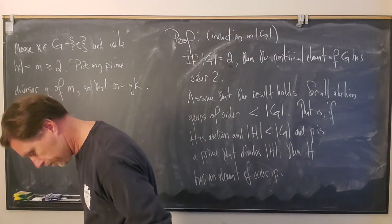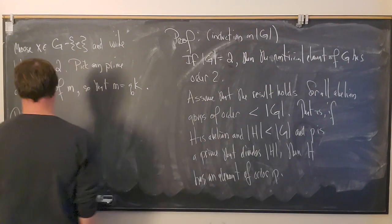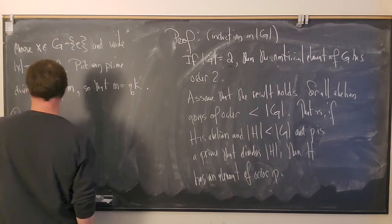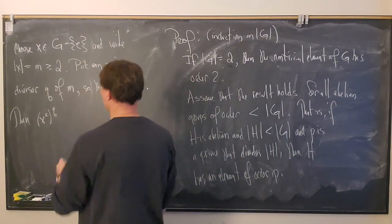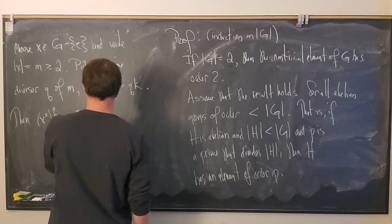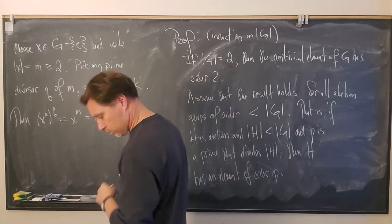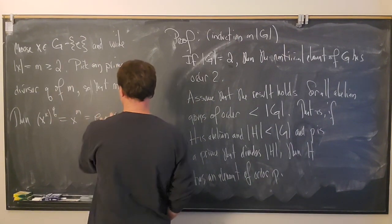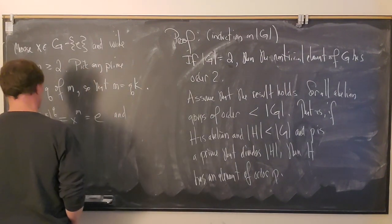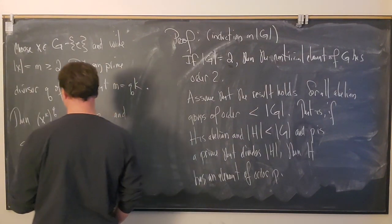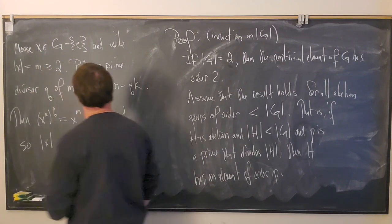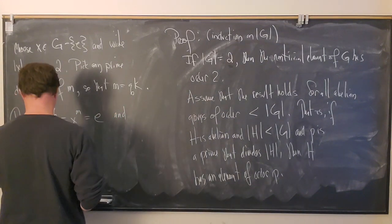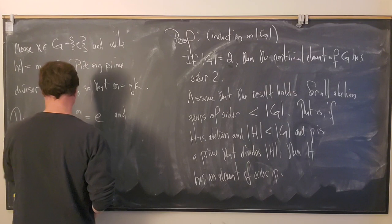Then x^k raised to the q equals x^m, which equals e. So the order of x^k equals q. We know x^k raised to the qth power gives the identity, so the order of x^k is less than or equal to q. But m is the order of x, so if there were a smaller number, it would contradict the minimality of m. This is true by minimality of m.